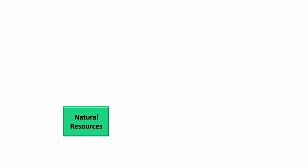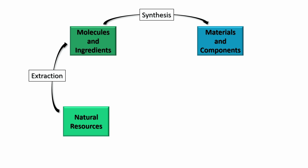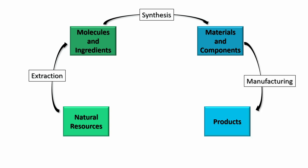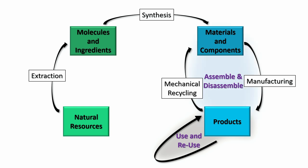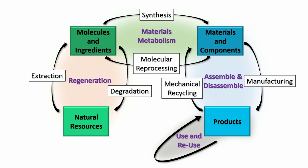The way I like to describe it: we take natural resources and through extraction we make molecules and ingredients. Then we take those molecules and ingredients and synthesize materials and components. Then we take those materials and components and manufacture products. If we do a very good job, those products stay in use and reuse for a very long time. But inevitably we have to turn those products back to materials and components through mechanical recycling — what I call the assembly-disassembly system. Then we take those materials and components and revert them back to molecules and ingredients through reprocessing — what I call the materials metabolism.